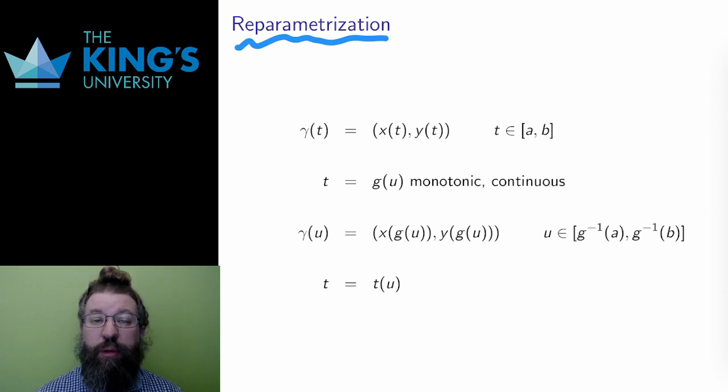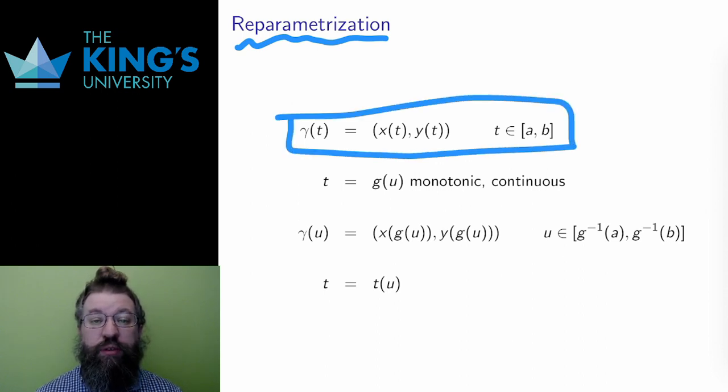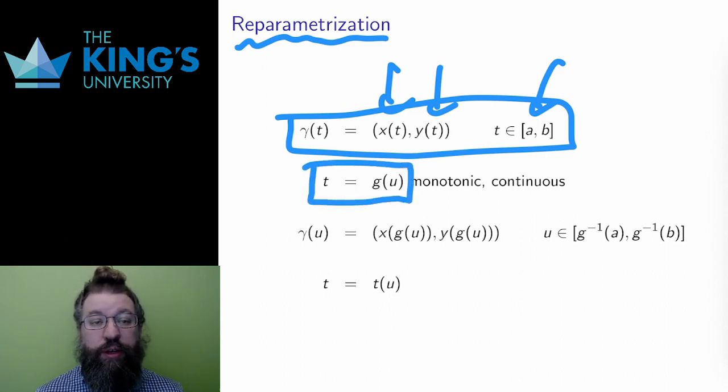Say I have a parametric curve gamma with coordinates x and y for some time domain t. To make a re-parameterization, I need to substitute t with a new variable, much like I do with integration substitution. So I set t equal to g for some function g.